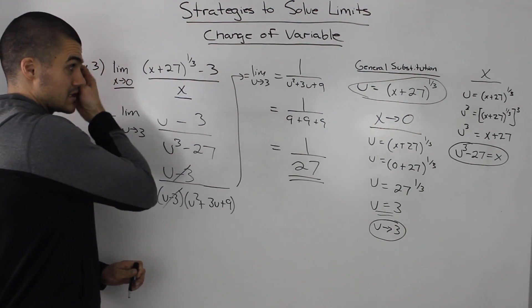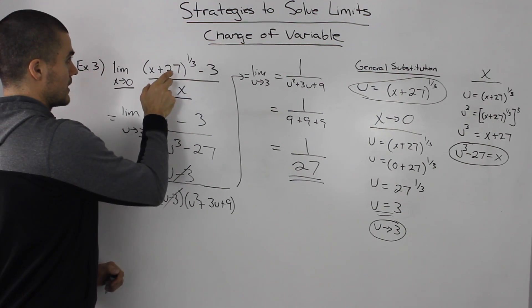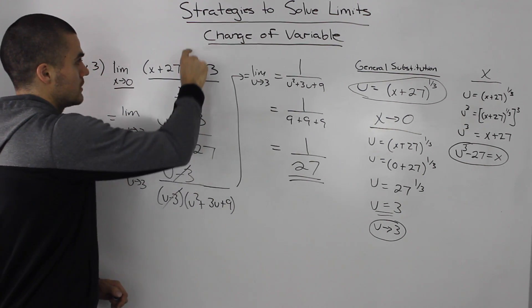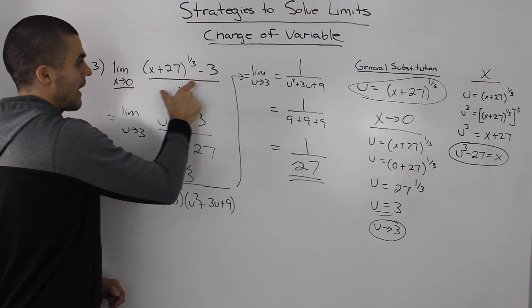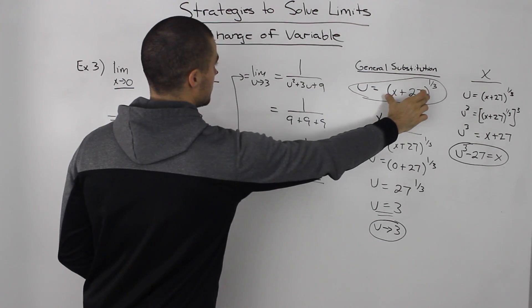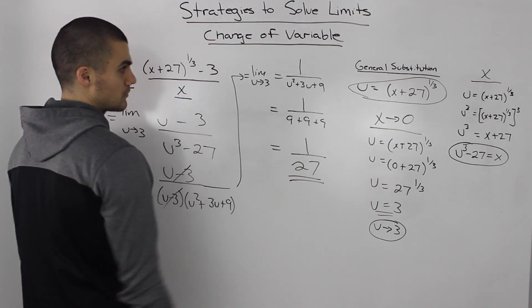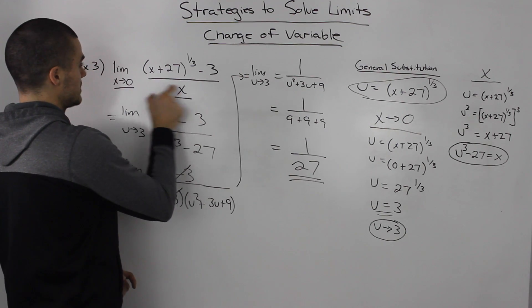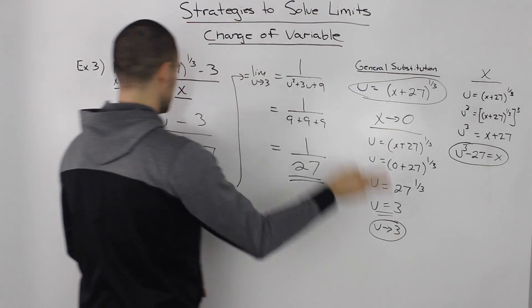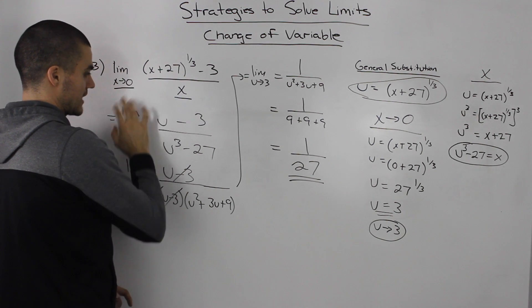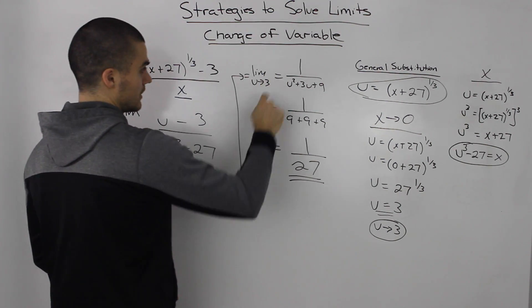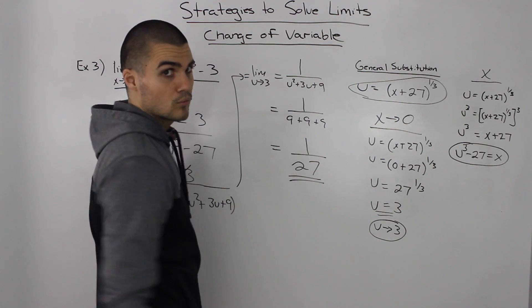Let's do a quick recap. We had this limit with (x+27)^(1/3), which was different than the other examples where we had the weird exponent to the power of a single x. When you run into something like this, let u equal that whole expression. Then we found equivalent expressions in terms of u for x→0 and for x using algebra. We substituted these into the limit, factored using difference of cubes, the (u-3) terms cancelled, then we plugged in 3 for u and got 1/27.